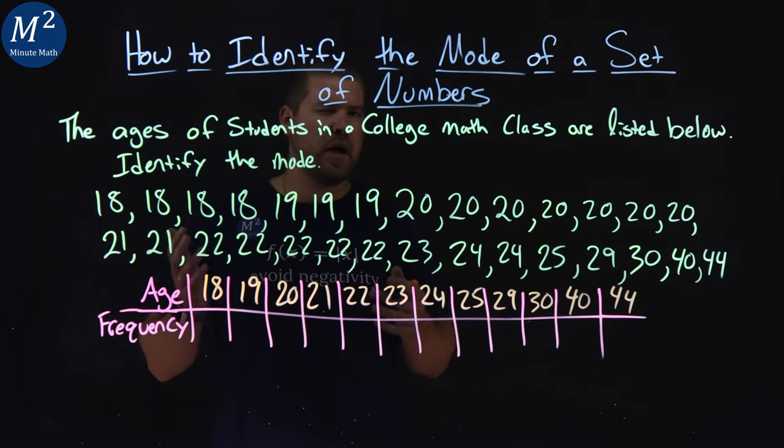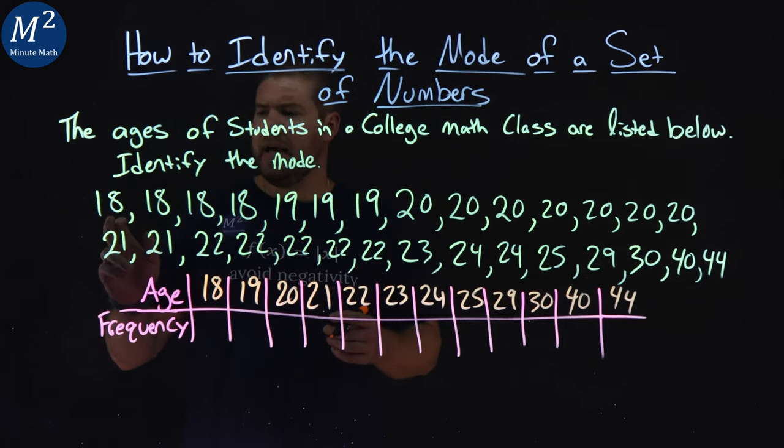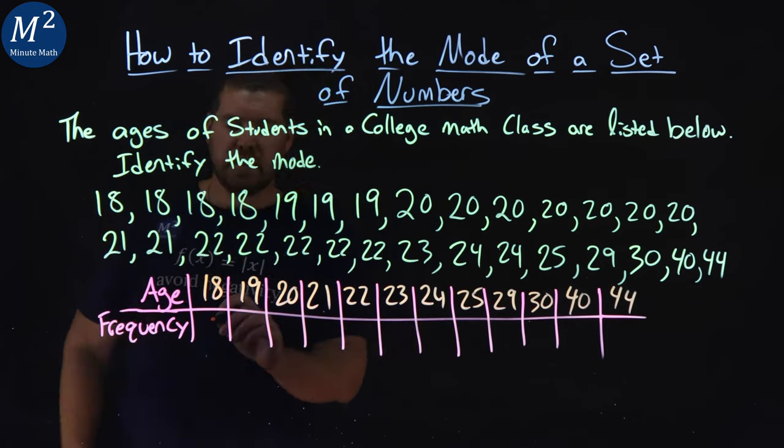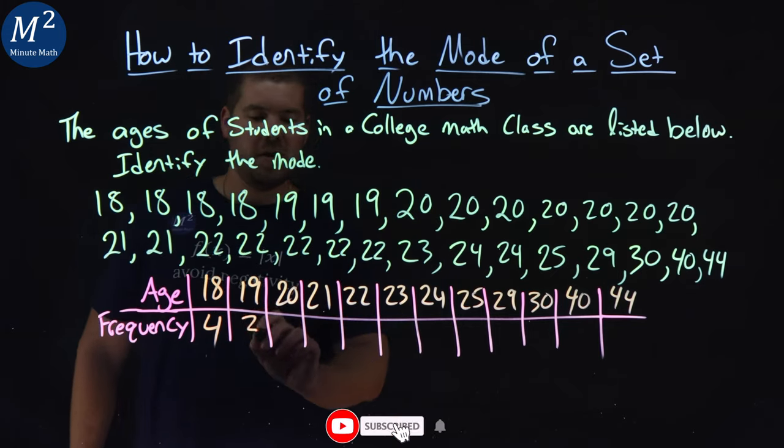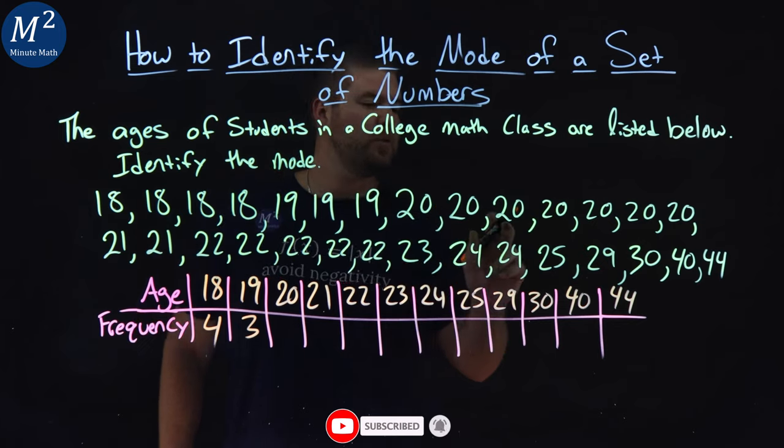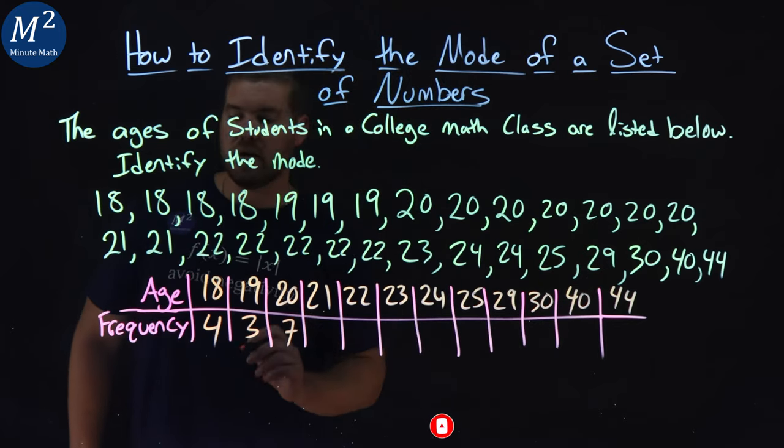So now let's go see how much each one of these ages happens. 18: 1, 2, 3, 4 eighteen-year-olds right there. 19: 1, 2, 3, three 19-year-olds. 20: 1, 2, 3, 4, 5, 6, 7. Ooh, good old 7 right there. So far the winner.